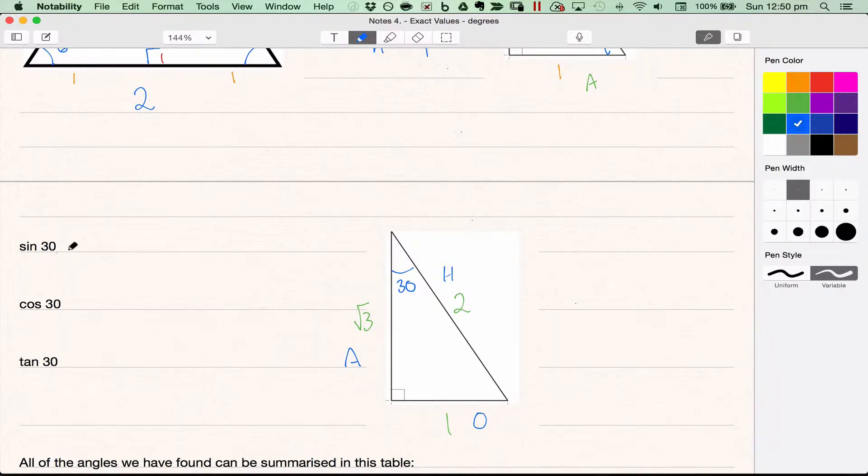So we can find sine of 30. You might like to pause and do this yourself. Continuing on, sine of 30, opposite over hypotenuse, which is 1 over 2.